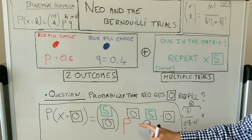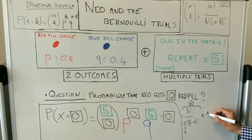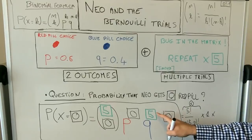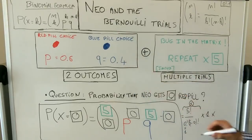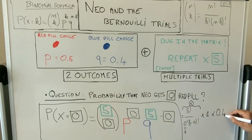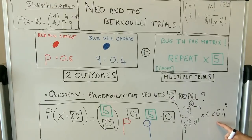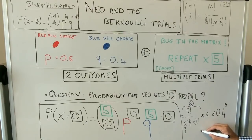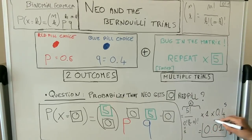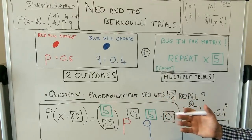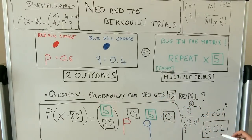So we get one times P to the power zero — which is one — times Q to the power five. Q is 0.4, so we get 0.4 to the power five. Using a calculator, that equals 0.01. The probability that Neo gets zero red pills is only 0.01 — very small, so we are really safe.